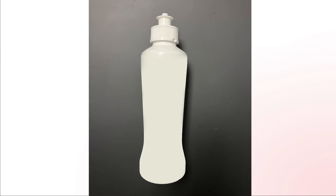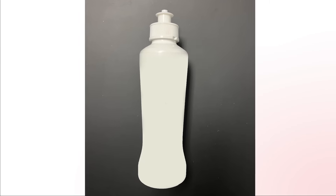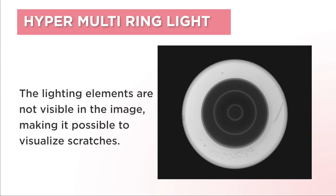Let's take an image of a scratch on the taper of a detergent bottle. When imaging with low angle ring lighting, the lighting elements will be reflected in the image due to the high reflectance of the object's surface and the angle of the taper. When imaging with hyper multi-ring lighting, the lighting elements are not visible in the image, making it possible to visualize scratches.